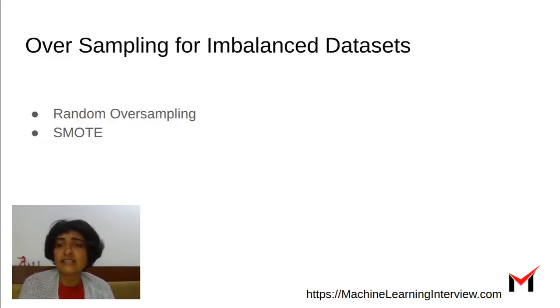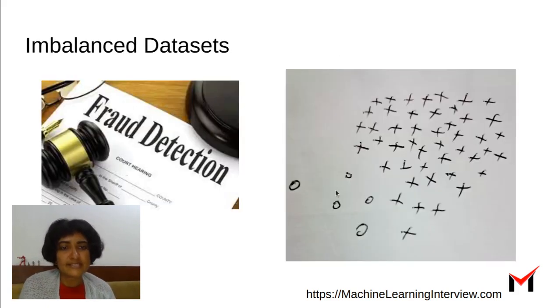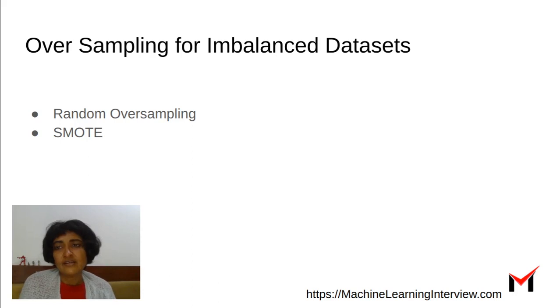Another technique is random oversampling, where you take any of these points in the minority class and you just keep adding that same point at random to the dataset so that the total number of data points matches that of the majority class or gets closer to the majority class in number. So that's random oversampling.